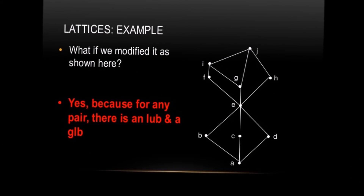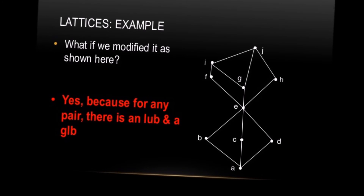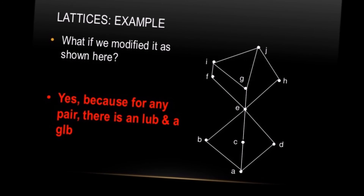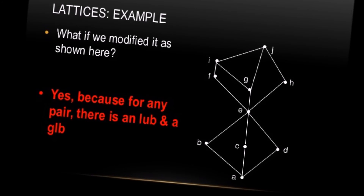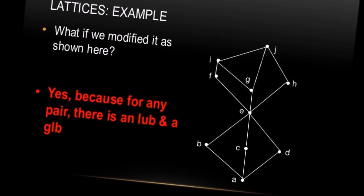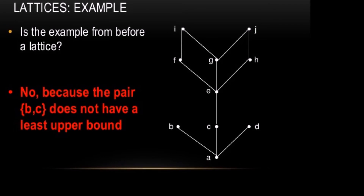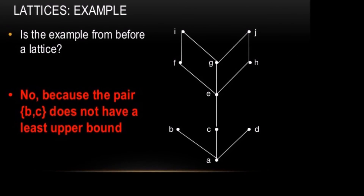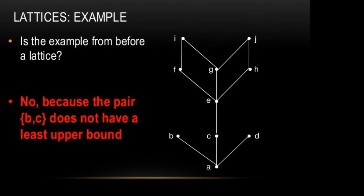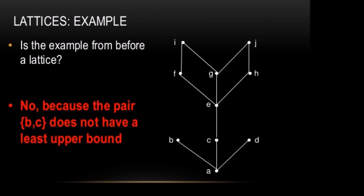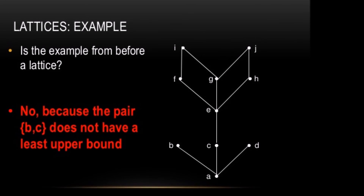Is the given figure a lattice? Yes, this figure is a lattice, because for any pair there is a LUB and GLB — a concept we have seen in the previous section. In another example, is this figure a lattice? No, this is not a lattice, because the pair B, C does not have a least upper bound.